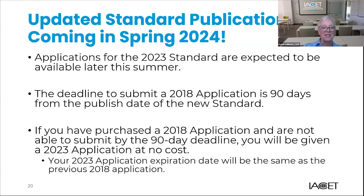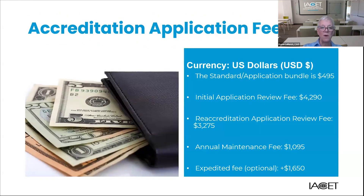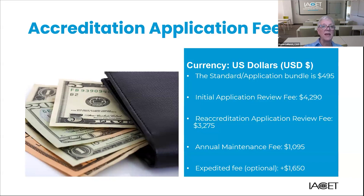The standard and application are bundled together and are available on the website for $495. The application review fee and annual maintenance fee are due upon submission of your application in the online portal. The initial application review fee is $4,290. The review fee for reaccreditation is reduced to $3,275. The annual maintenance fee is $1,095, and that's due each year. If you would like your application expedited, you can elect to pay an additional $1,650.